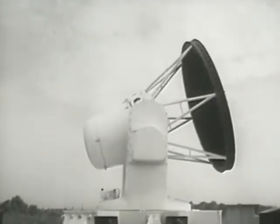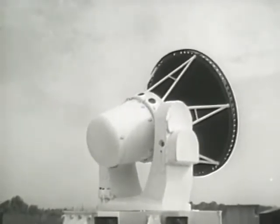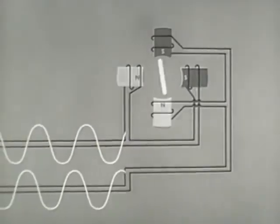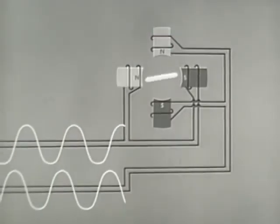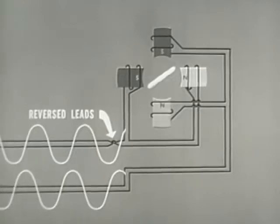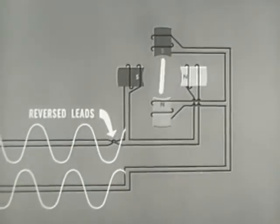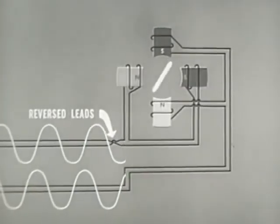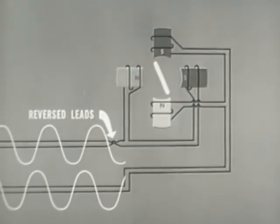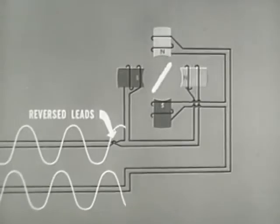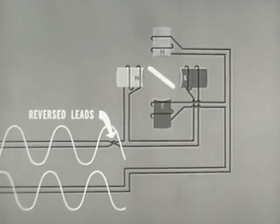The two-phase motor in this installation is called on to change its direction rapidly. This rapid change of direction is accomplished simply by reversing the polarity of only one set of poles in the motor. The polarity of the second set of poles will remain unreversed. The field will now rotate in the opposite direction with the rotor following at a slightly slower speed.